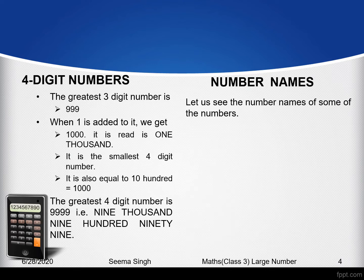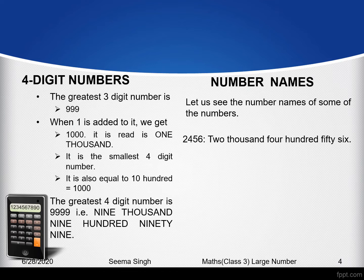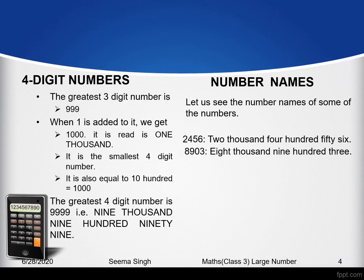Now let's understand how we name four-digit numbers. The first example number is 2456 — we name it two thousand four hundred and fifty-six, because the fourth place in a number is thousands. Another example: 8903 — its name is eight thousand nine hundred and three, because the digit at the tens place is zero, so it is nine hundred and three.